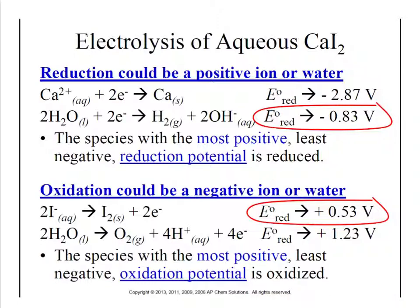With electrolysis, something's going to be reduced and something's going to be oxidized. When we look at reduction — the gain of electrons — there are two things that can be reduced. The cation: in the case of calcium iodide, the calcium could be reduced, or the water in the solution could also be reduced. It depends on who has the better reduction potential. The I⁻ is not going to be reduced since it's already negative and won't take on more electrons. So we just look at calcium and water.